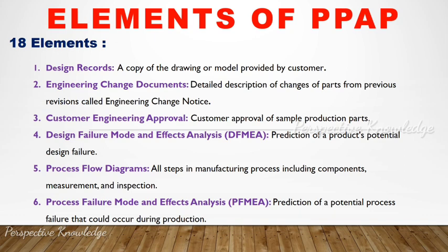The third element is Customer Engineering Approval — customer approval of a sample production part. The fourth is Design Failure Mode and Effects Analysis (DFMEA) — a prediction of potential design failures. If there is a design failure, this document captures it. The fifth is the Process Flow Diagram — all steps in the manufacturing process including components, measurements, and inspection.